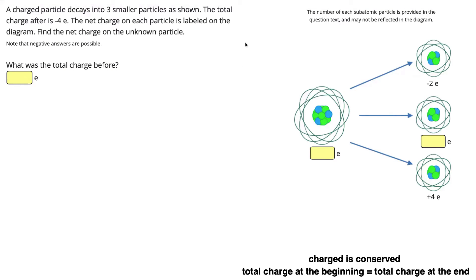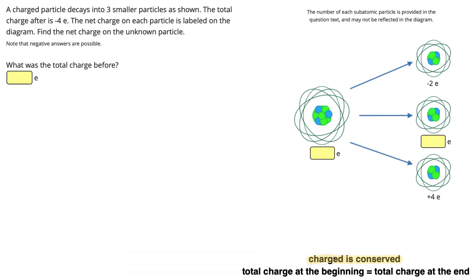In these problems, we're going to be using the idea of the conservation of charge. Because charge is conserved, that means it's not created or destroyed — it's always coming from somewhere. The total charge at the beginning must always be equal to the total charge at the end.